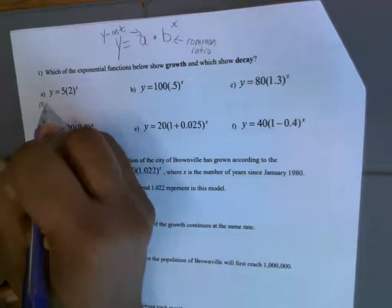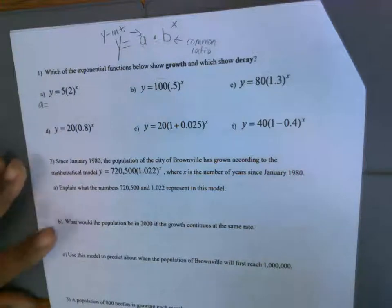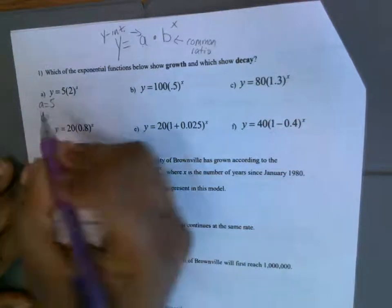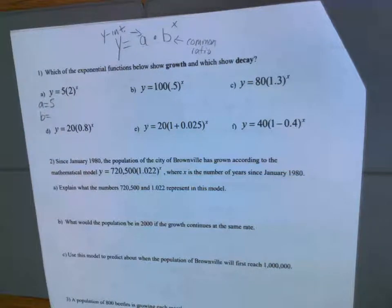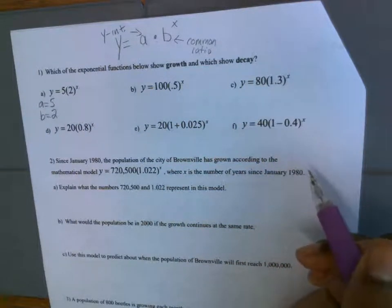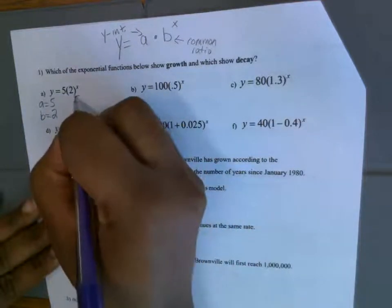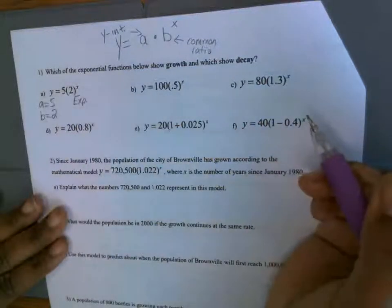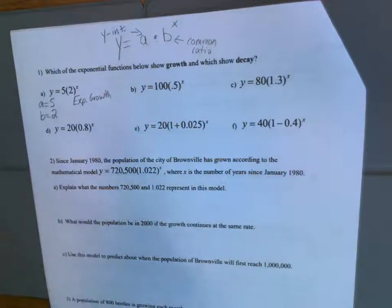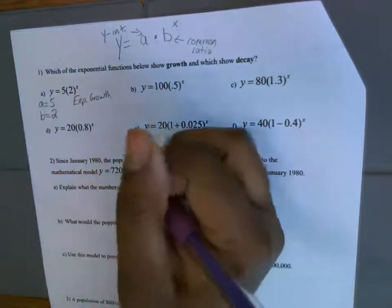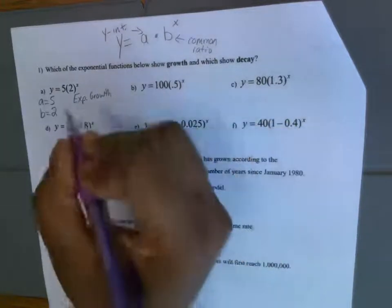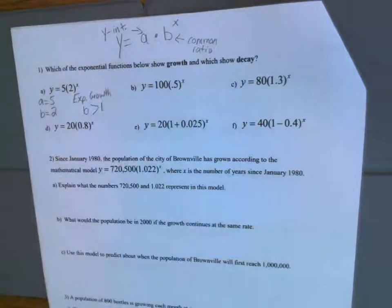What is going to be my A in this exponential function? The five — five is my A. What's going to be my B? Two. Excellent job. Is this exponential growth or exponential decay? This is exponential growth. How do we know? Because B is greater than one — that's how we know. Great job.